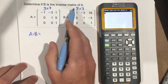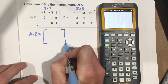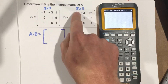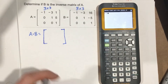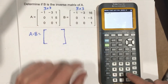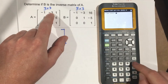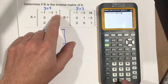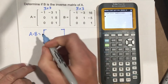We know if we're taking a 3 by 3 times a 3 by 3, we get a 3 by 3. So I'll mark 3 by 3 here. We'll start by doing row 1 times column 1: negative 1 times negative 1, plus negative 3 times 0, plus 1 times 0. We end up with 1 there.